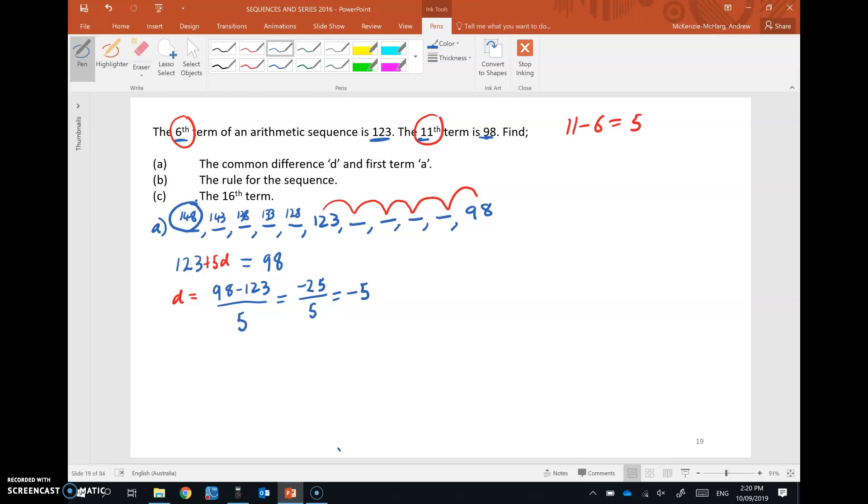But to do this algebraically, I'm going to take that common difference and put it into the sequence rule. And I'm going to do it for a particular value of n that I already know about, and that is the sixth term where it's 123. So for n equals 6, T₆ is 123. So watch me put this information in. I'm going to put 123 equals A, our first term, plus, now it's usually n take 1, but in this case n is 6. And then we multiply by a common difference of negative 5.